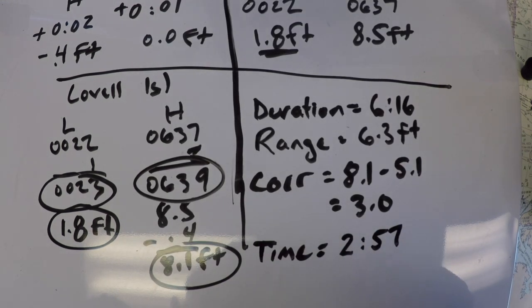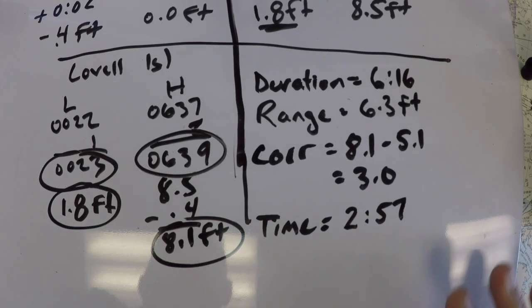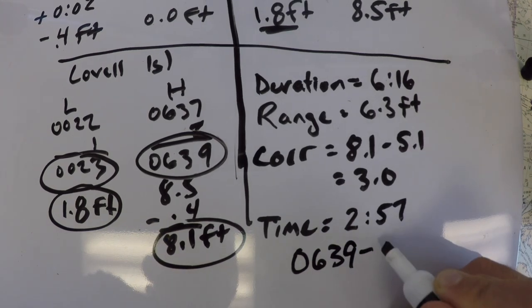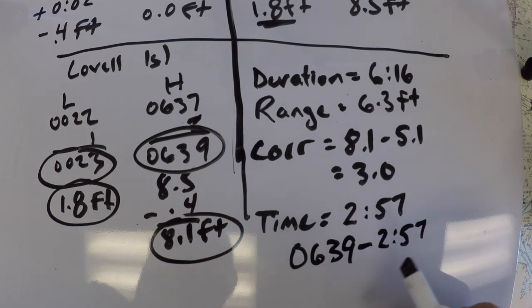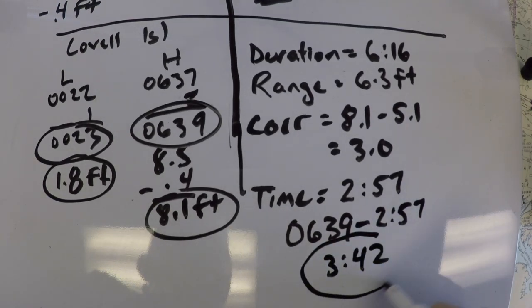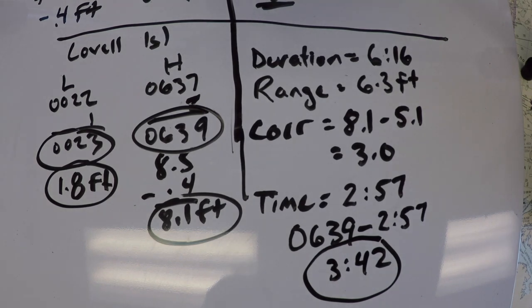And you may get a slightly different answer. The directions say you can just choose the closest value, but if you decide to interpolate for a slightly closer value, you might get a little bit of a difference. And then so in essence, what they're saying is, if you take 0639 minus 2:57, you're going to end up with a time of 3:42. A clock time of 3:42. And that's going to be the moment when the tide is safe to pass.